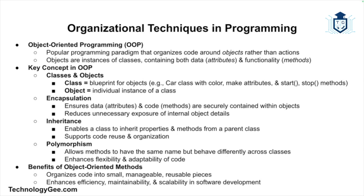Next let's discuss object-oriented programming, which is one of the most popular programming paradigms. In OOP, programs are organized around objects rather than actions, and an object is an instance of a class which can have both data and functions associated with it. A class is a blueprint for creating objects — for example, you could have a car class with attributes like color and make, and methods like start or stop.